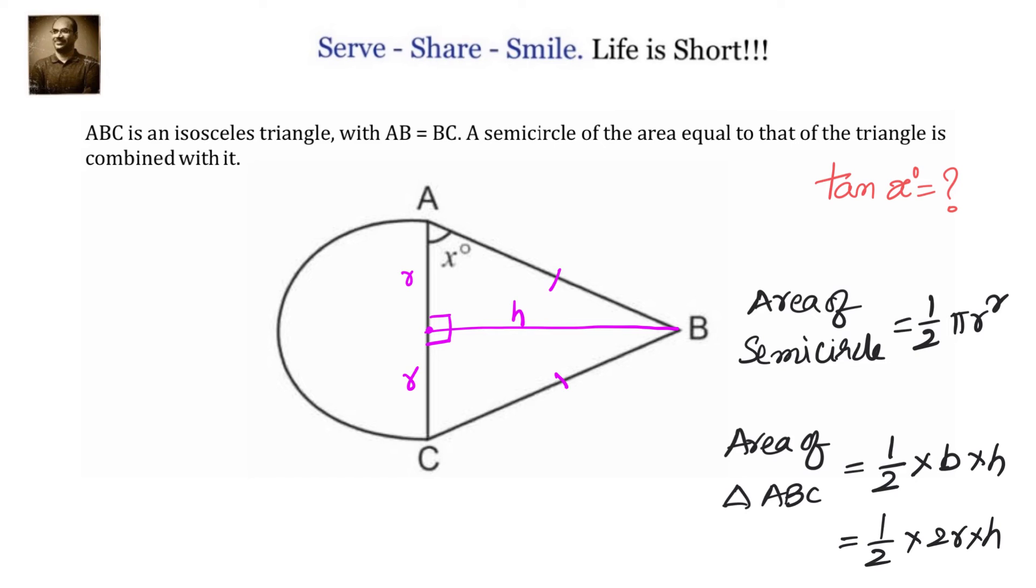Equate both of them to get a relation between h and r. We will write down half pi r squared. Before that, let us go to the triangle where the angle is given as x degrees. We can see that tan is opposite by adjacent, that means tan x is h by r.